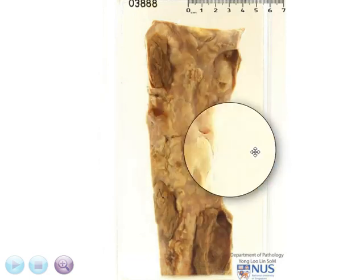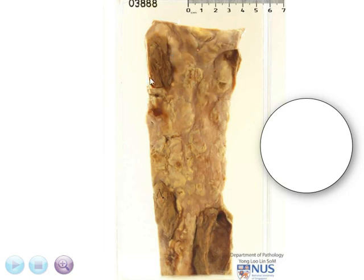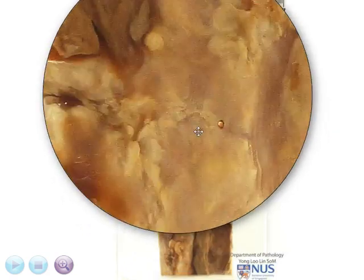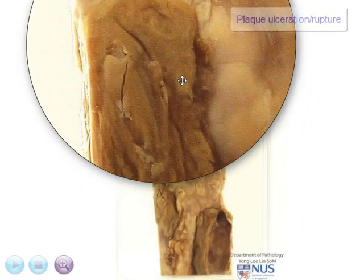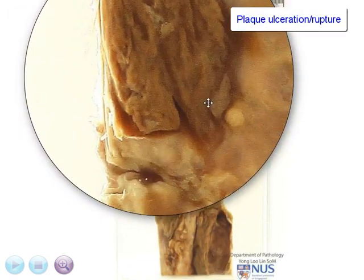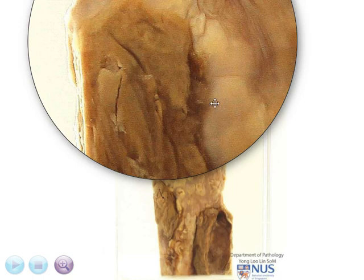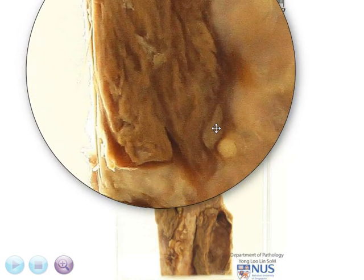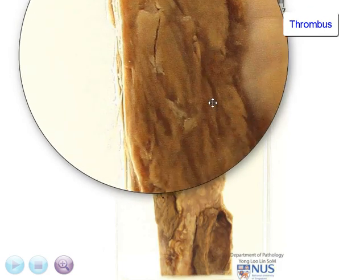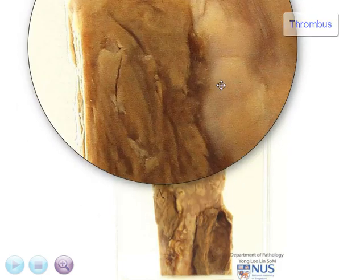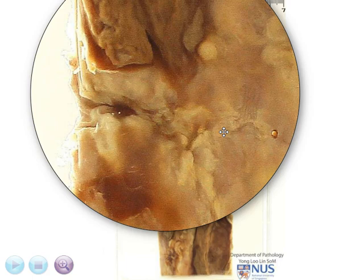You'll notice also in some areas there are these other brownish patches. What has happened in this area is that the plaque has undergone ulceration or ruptured. This, of course, will then expose the underlying subendothelial tissue to the bloodstream and give rise to thrombosis. So this brownish area represents a thrombus over a ruptured plaque. Because the aorta is a large diameter vessel, usually the thrombosis is non-occlusive.